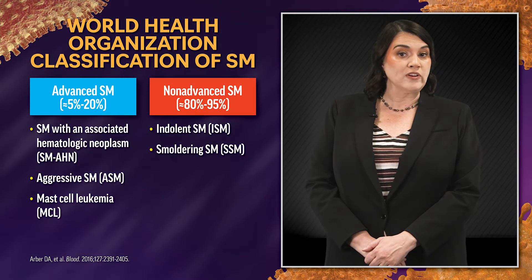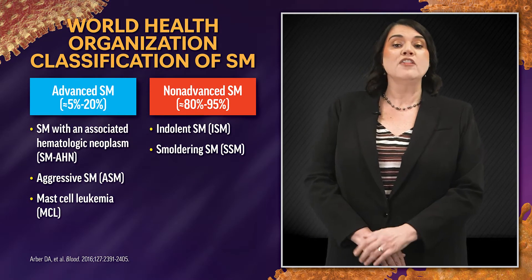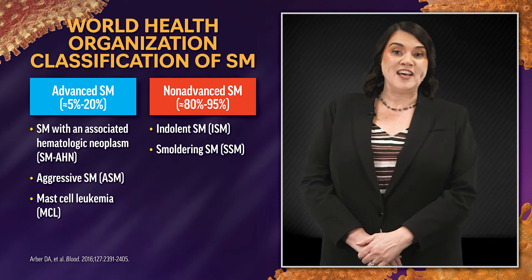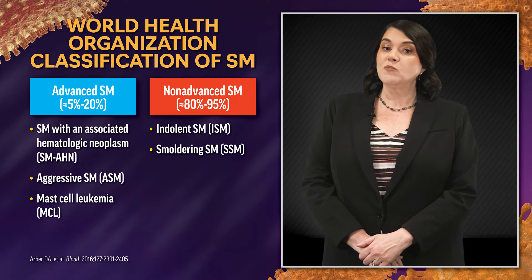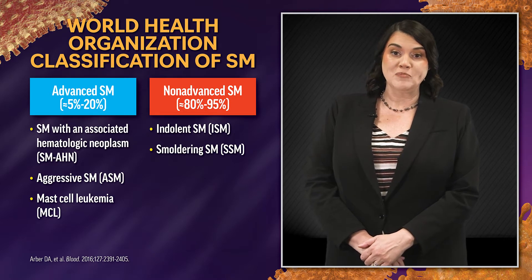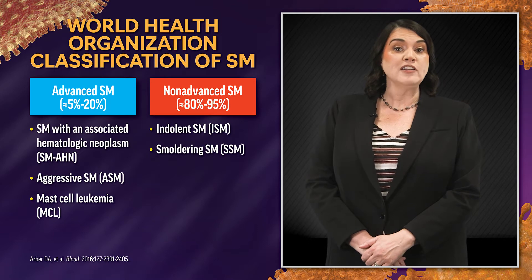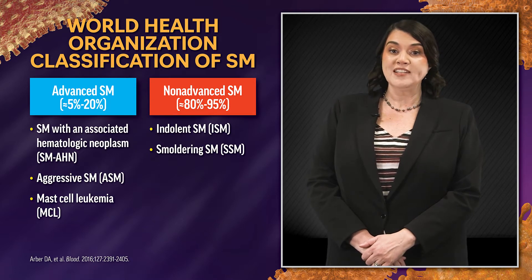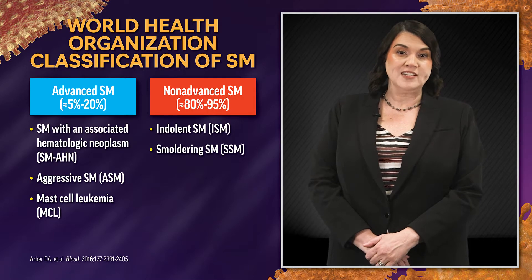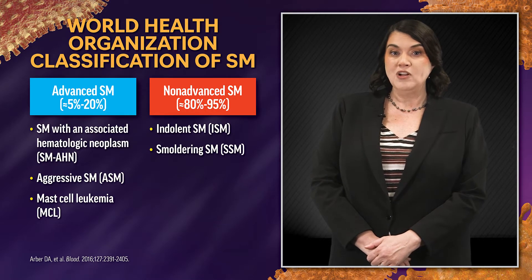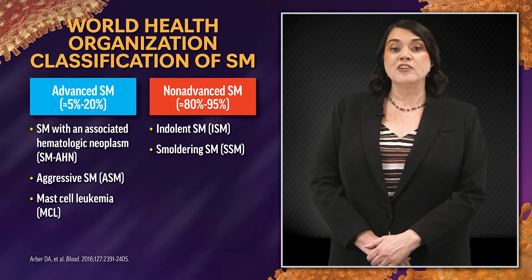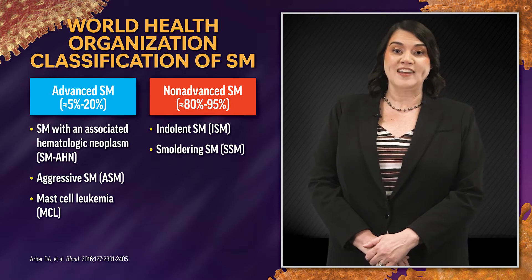According to the World Health Organization, there are five main types of SM. The advanced subtypes are aggressive SM, SM with an associated hematologic neoplasm, and mast cell leukemia. The non-advanced subtypes are indolent SM and smoldering SM. About 80% of cases of SM are thought to be of the indolent subtype, although robust epidemiological data on subtypes is lacking.